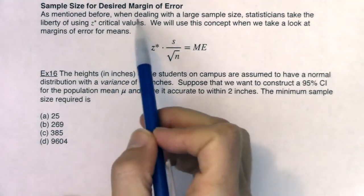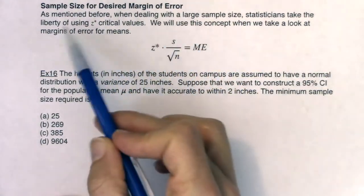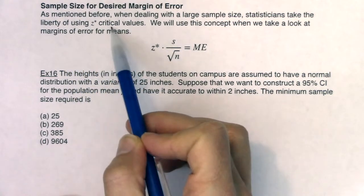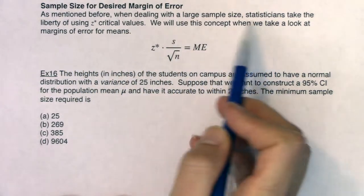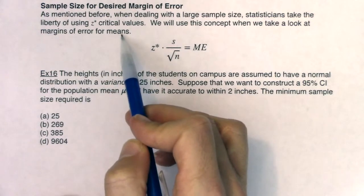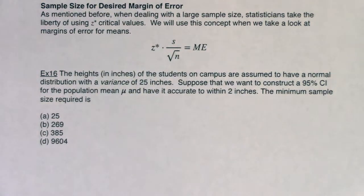So as mentioned before, when dealing with a large sample size, statisticians take the liberty of using Z star critical values. We will use this concept when we take a look at margins of errors for means. So that's the only time we're going to use Z star critical values. So we're going to do this the long algebraic way. And then like I did for proportion land, I'll just show you how you can kind of plug it into a formula when you're done.